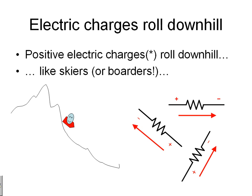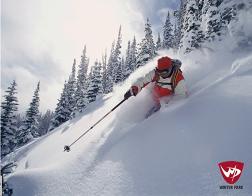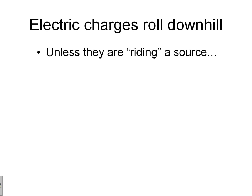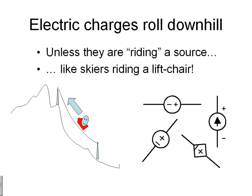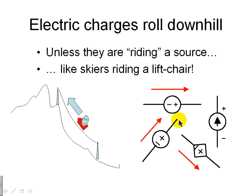They always slide downhill — unless they are riding a source, like a skier riding a lift chair. For electric charges, a lift chair is a source. They ride the source uphill, pushed by the source itself. These sources are represented in electric circuit theory with symbols indicating which of the two terminals is higher. Those sources will try to push electric charges uphill, like a lift. Sometimes they will not succeed, but we will talk about that later.